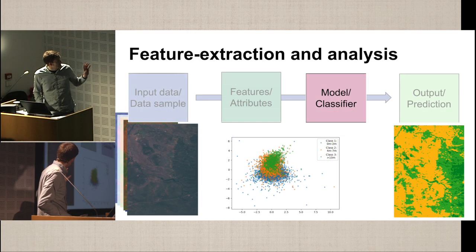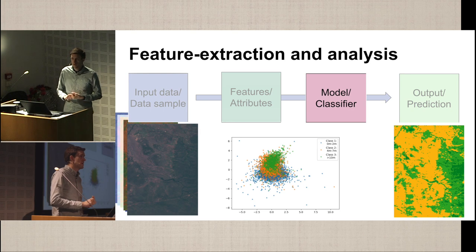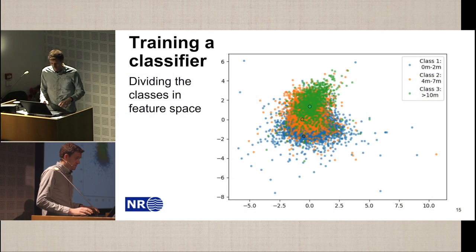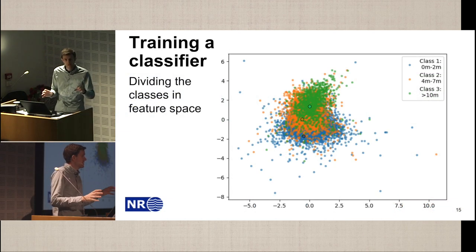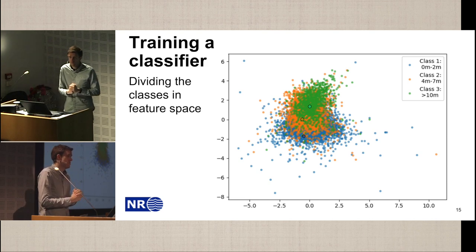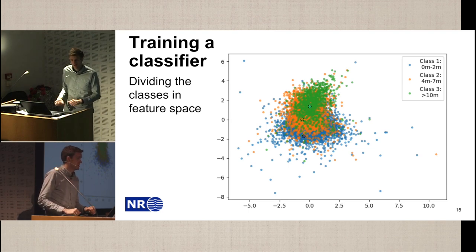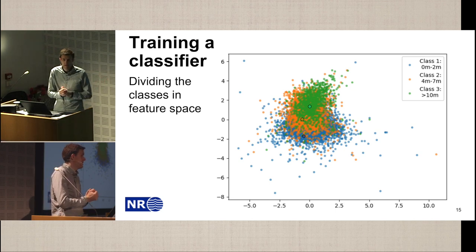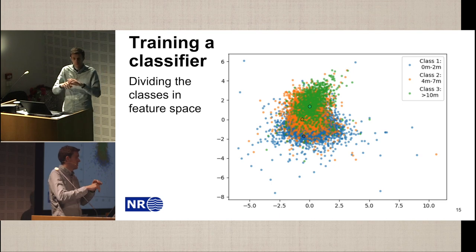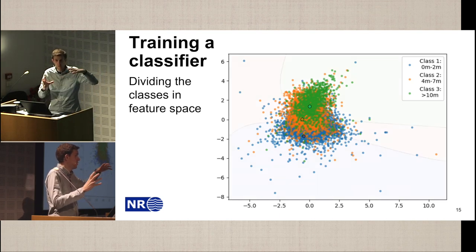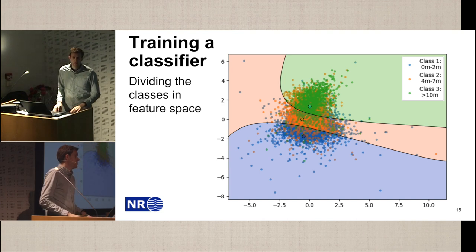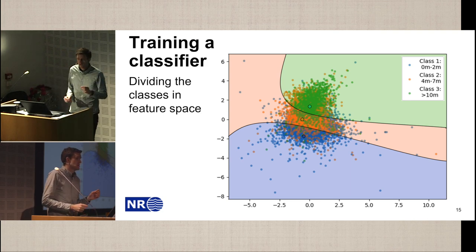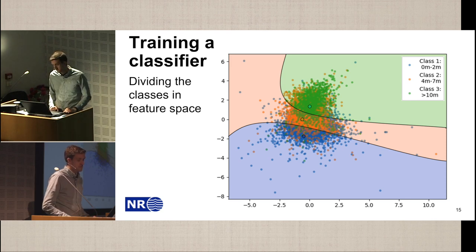Let's look more into how we can classify given these features. The goal of a classifier is to divide the clusters in the feature space, while for regression it's to find the trend of the points. A simple approach is to find the mean values of each cluster, compute the statistics and covariance, and then make a statistical probability of which class a pixel should belong to, depending on where it lies in the feature space.